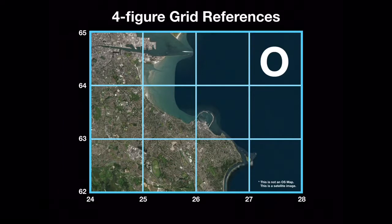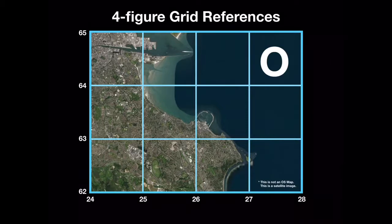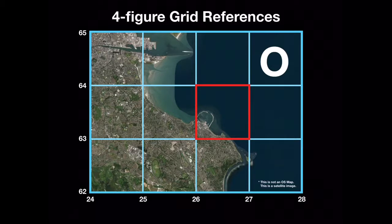Four-figure grid references provide the location of a grid square on an OS map. These are often used to give the location of larger landmarks and land uses, such as villages, forests or mountains. For example, let's look at the four-figure grid reference for Dun Laoghaire Harbour.